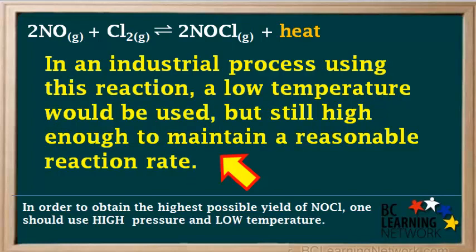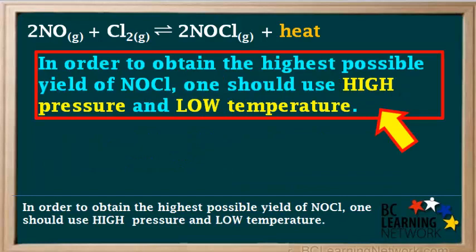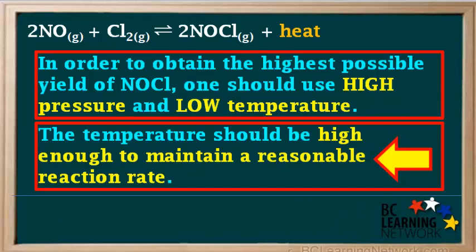So, if this reaction was being carried out on an industrial scale, a compromised temperature is chosen — one that is low enough to produce a fairly high yield, but still high enough to maintain a reasonable reaction rate. In order to obtain the highest possible yield of NOCl, one should use high pressure and low temperature. However, if this is carried out on an industrial scale, the temperature should be high enough to maintain a reasonable reaction rate.